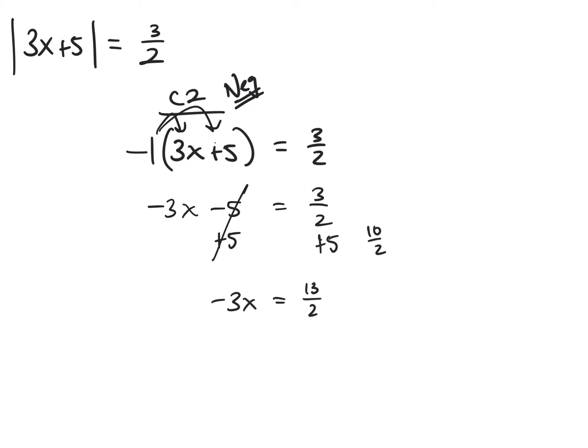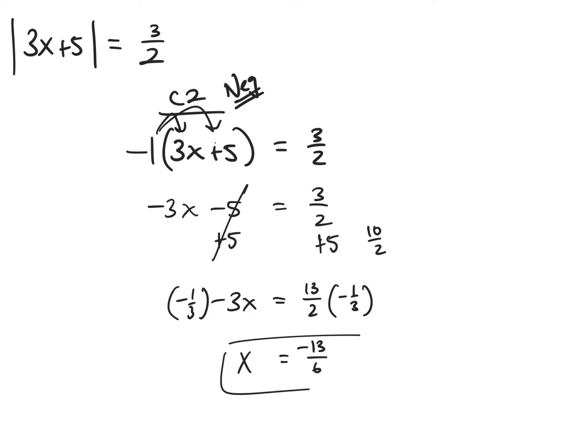Lastly, I need to solve for x. You can divide by negative 3 if using a calculator. Mr. Minger prefers multiplying by the reciprocal rather than dividing a fraction by a number. So my last step gives x equals negative 13 over 6, and I ask myself can I reduce? The answer is no.